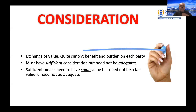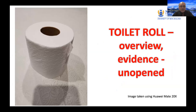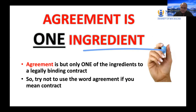Examples of consideration: $1, one cent, one apple, half an apple, one hour, a phone, a gold nugget — any of these things can be good consideration. You can theoretically build an entire 40-storey office block for a mere $1 — the principle is there. Even toilet paper can be good consideration. This unopened roll here is evidence of value. So consideration must exist but doesn't have to be commensurate.